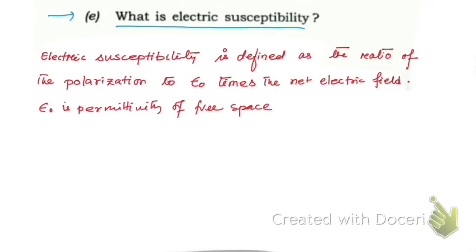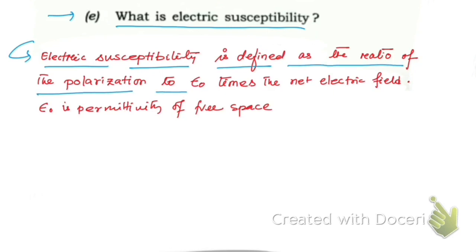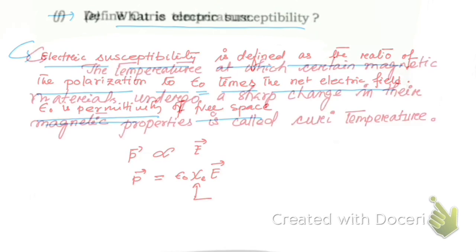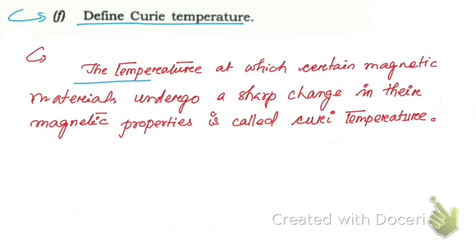Next question: what is electric susceptibility? Electric susceptibility is defined as the ratio of polarization to epsilon-naught times the net electric field. The polarization P is directly proportional to the electric field E, written as P = ε₀·χ_e·E, where χ_e is the electric susceptibility.